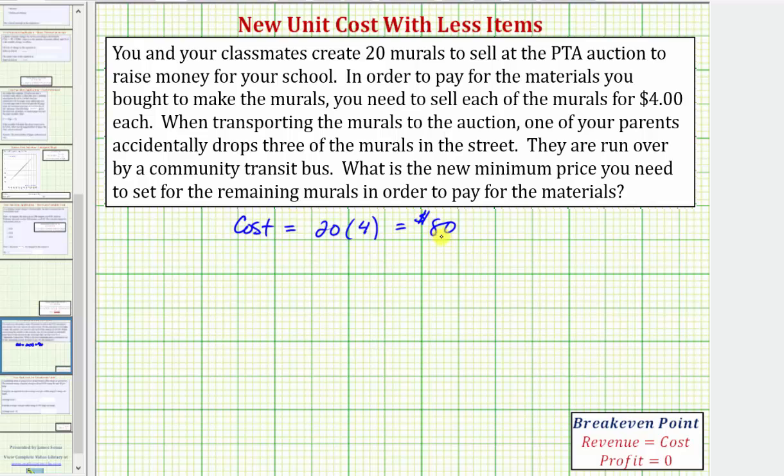It's going to be $80 even when selling fewer murals. So if we let x be equal to the minimum cost per mural in order to cover the cost of the materials, after three of the murals are destroyed, that leaves 17 remaining murals that must be sold in order to cover the cost of $80.